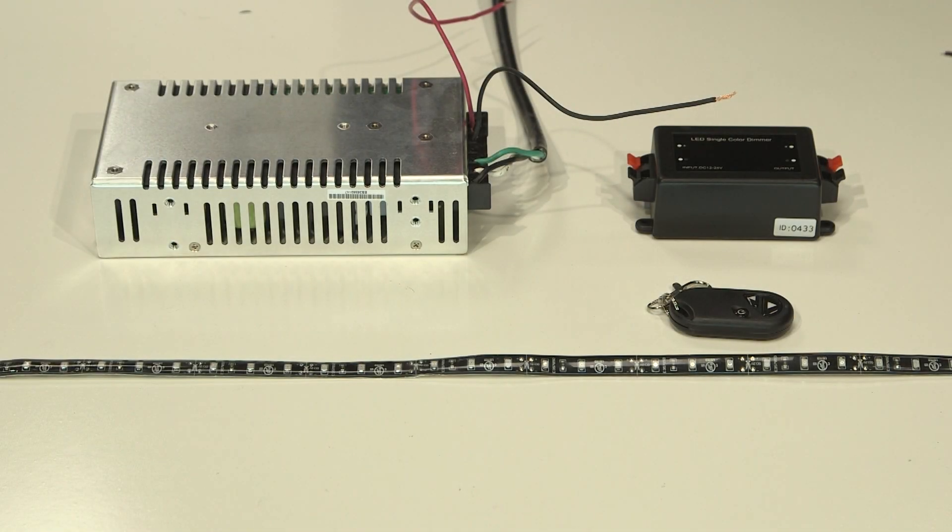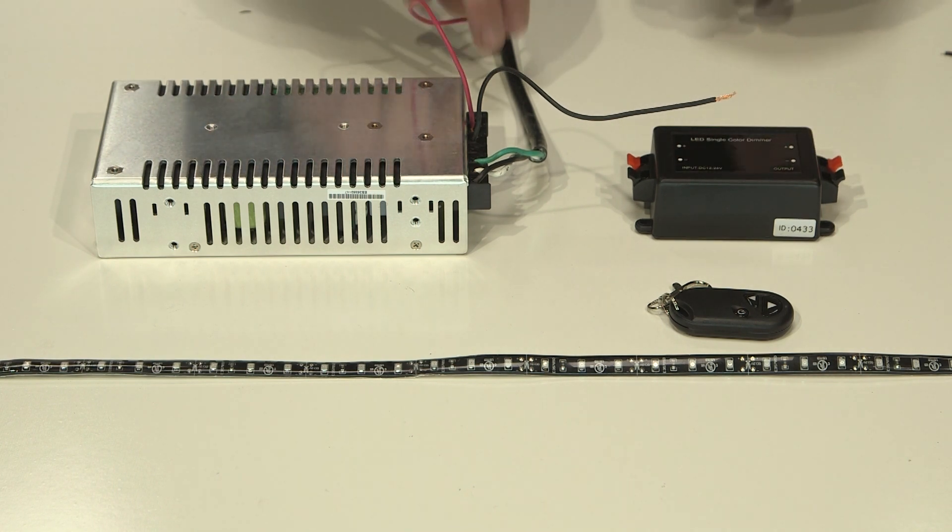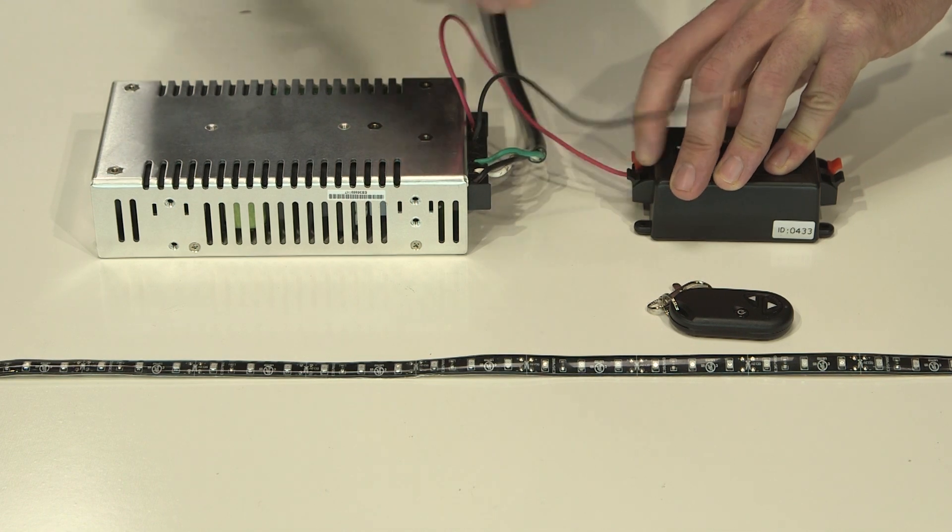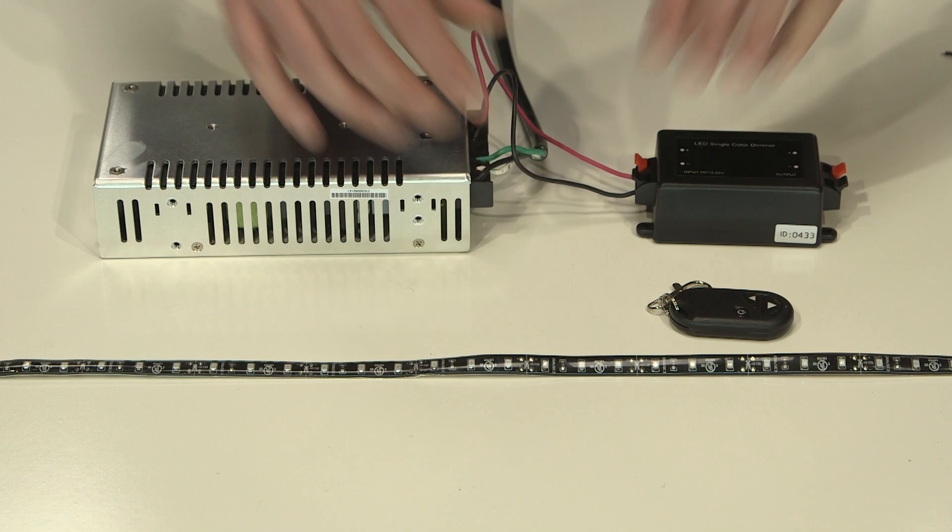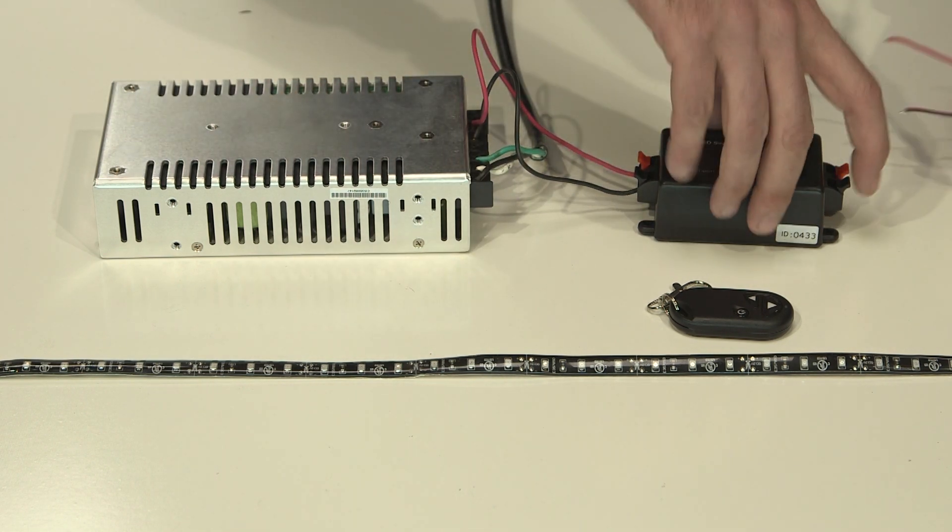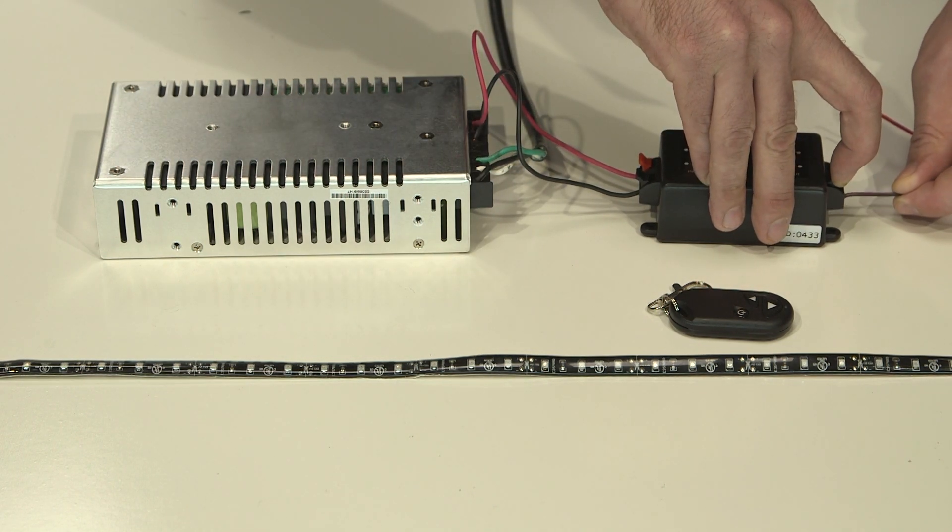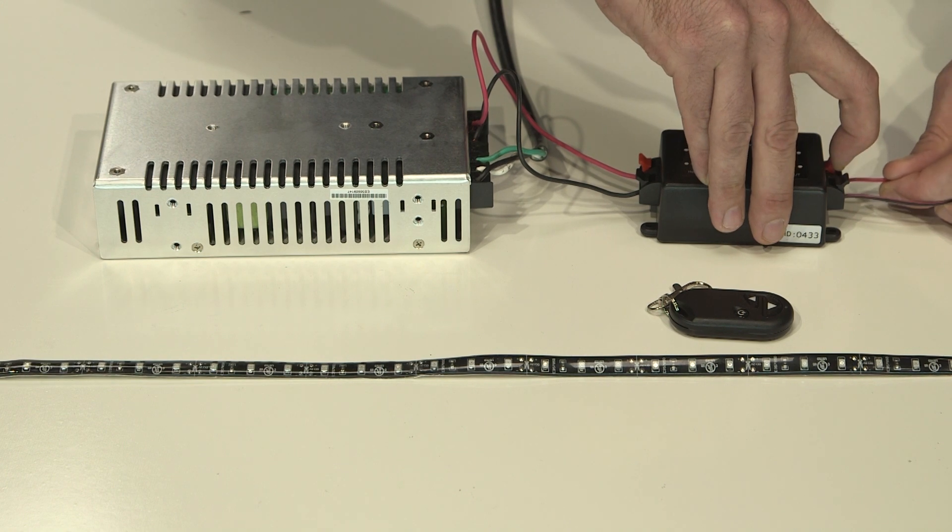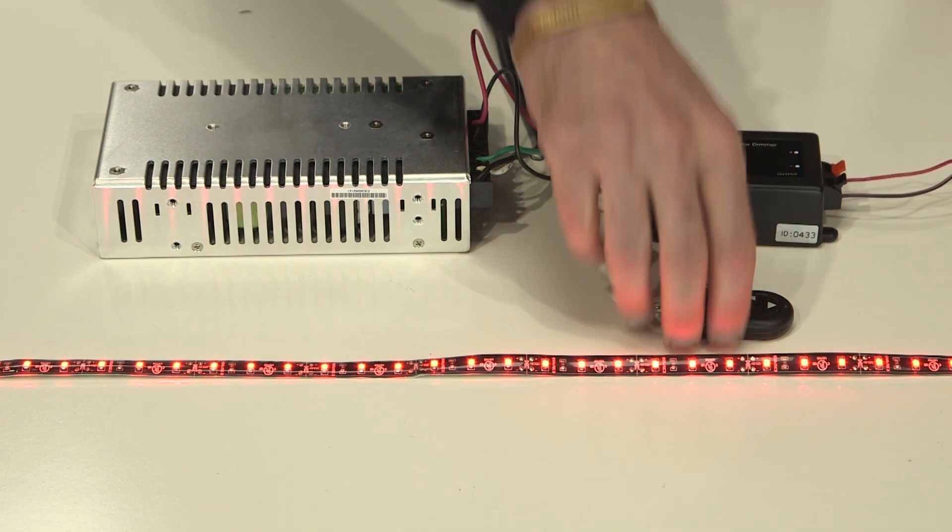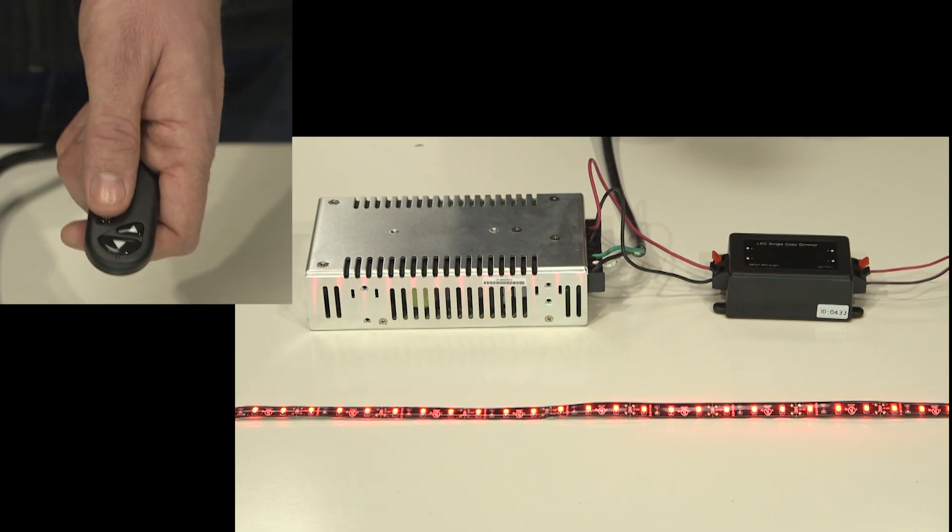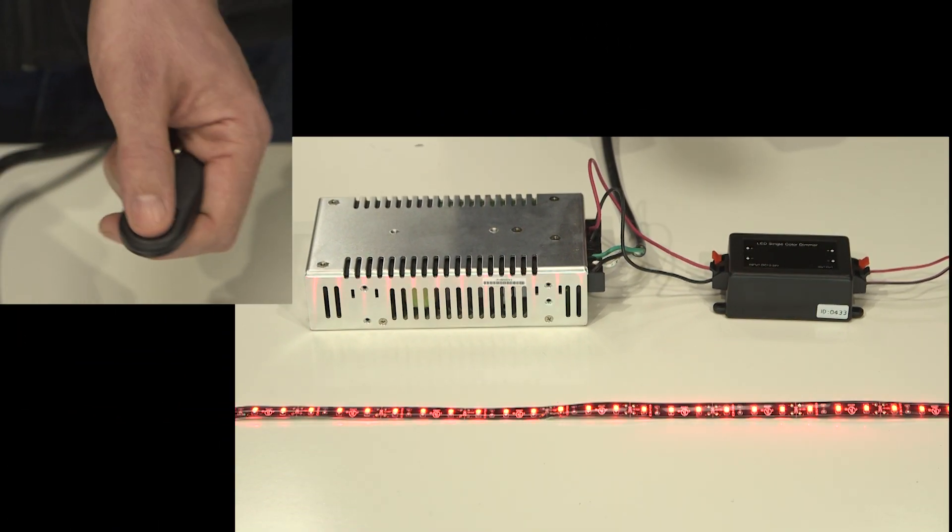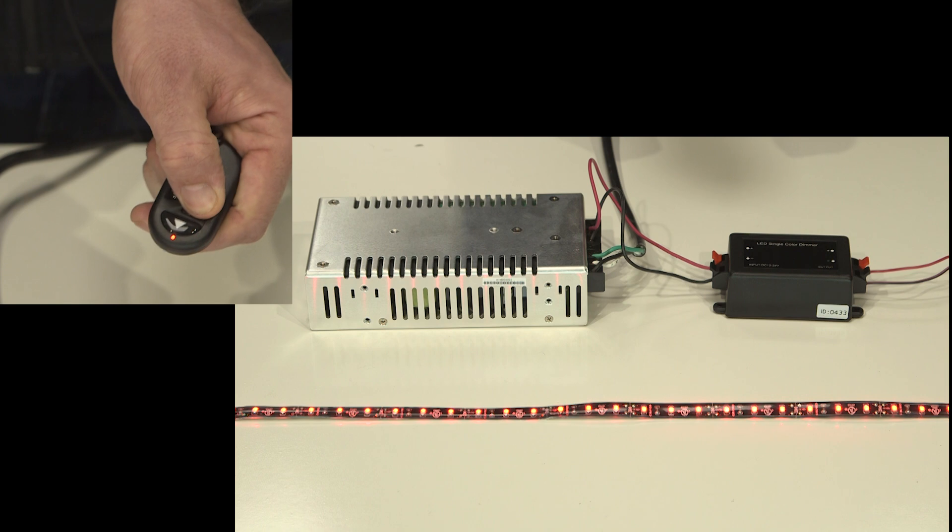When using the low voltage dimmers, you'll see they all have an input and output side labeled on them. The input side is where we're going to wire in the power supply, and the output side is where we're going to wire up the light strip. On this one you'll notice our light strip is red. This one comes with remote control and it's got an on-off button as well as buttons for dimming up and down.